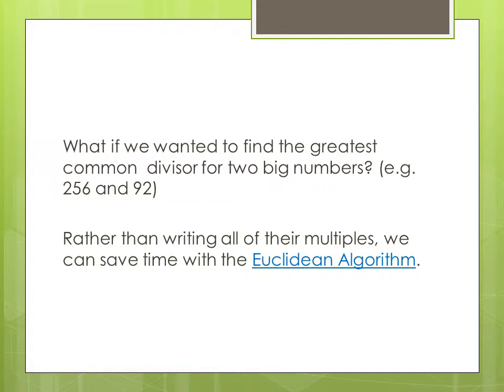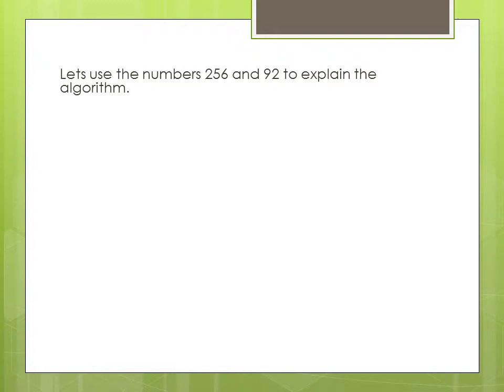Now what if we wanted to find the greatest common divisor for two big numbers? For example 256 and 92. Rather than finding all of their multiples we can save time with the Euclidean algorithm.